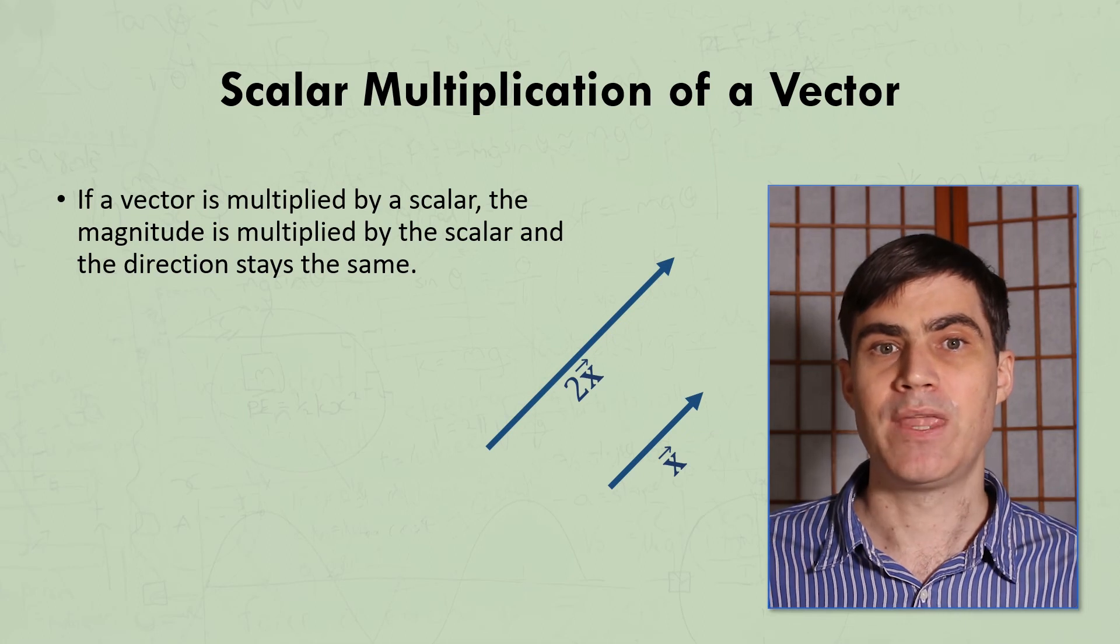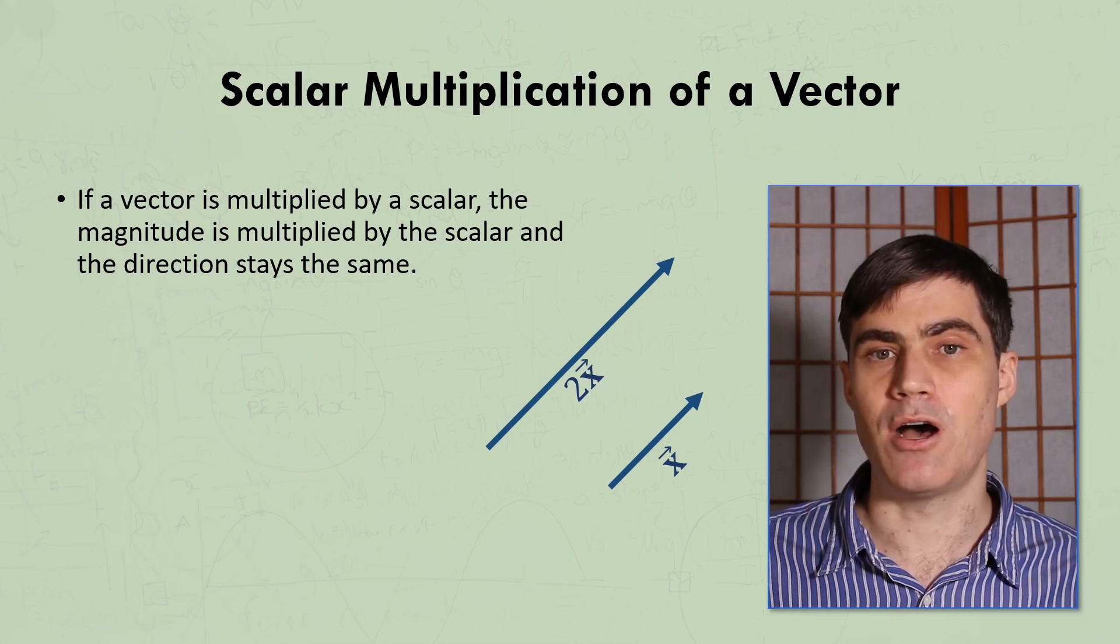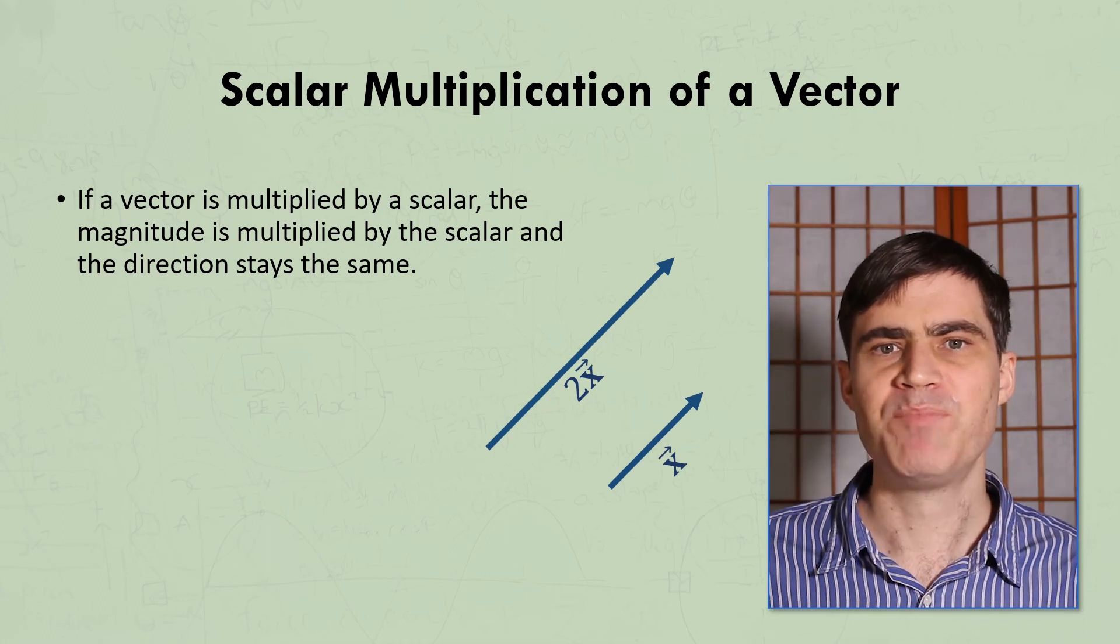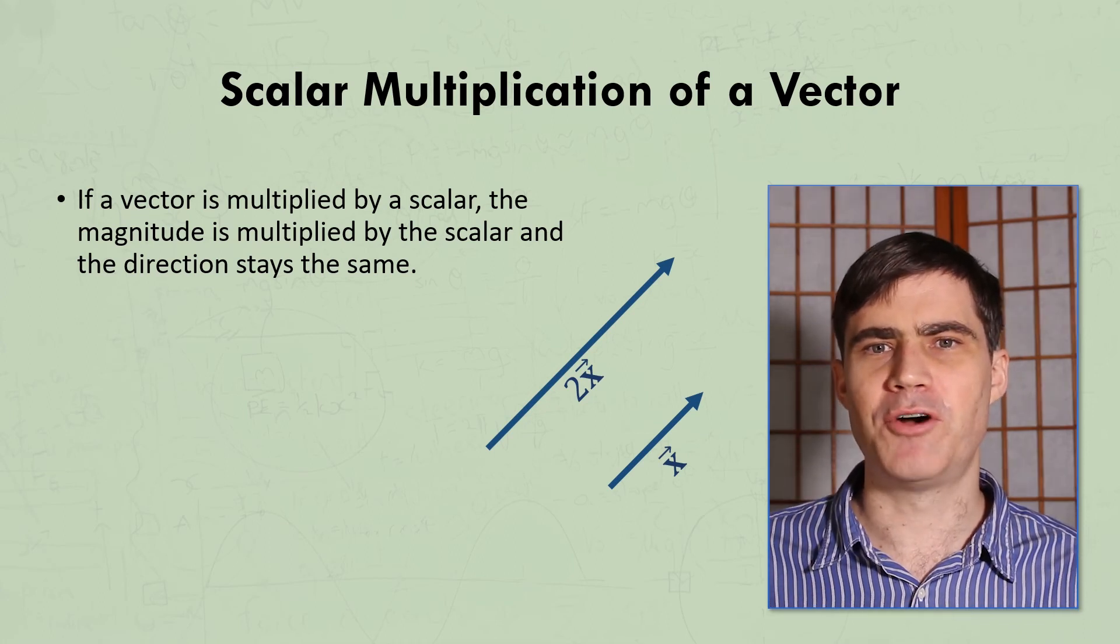Please note that x is the vector, so it's bold and has an arrow over the top, while the 2, the scalar, is typed in plain text.